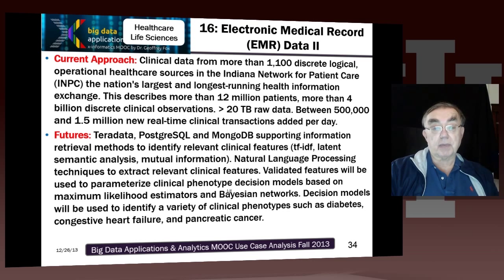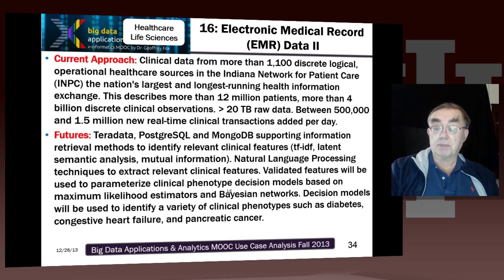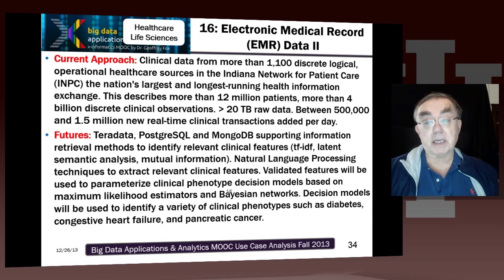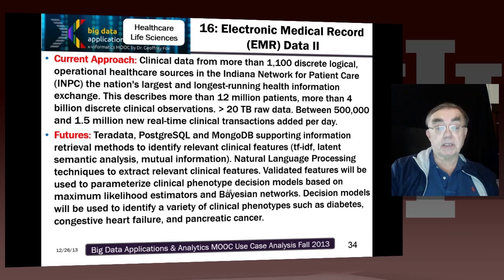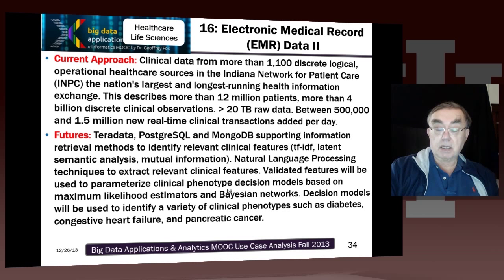That will use standard web search techniques like TF-IDF, document technologies, and latent semantic analysis — related to latent Dirichlet allocation — to extract information. Natural language processing is important here, as in other document-based applications, because so much information is captured in documents and there are so many that processing must be automated. Large-scale maximum likelihood methods and Bayesian networks will be used to build decisions through machine learning, applicable to areas such as diabetes, heart failure, and cancer.